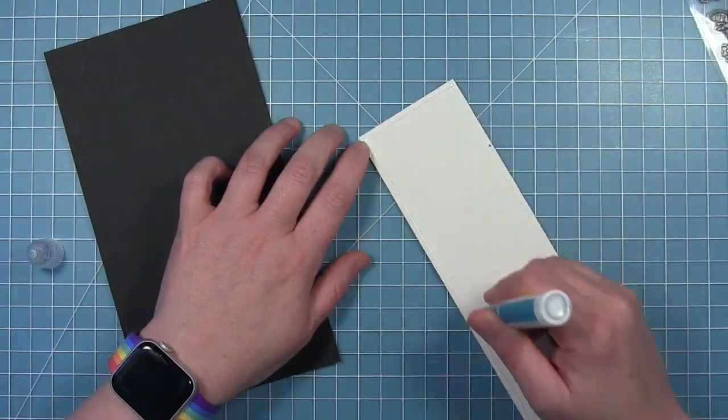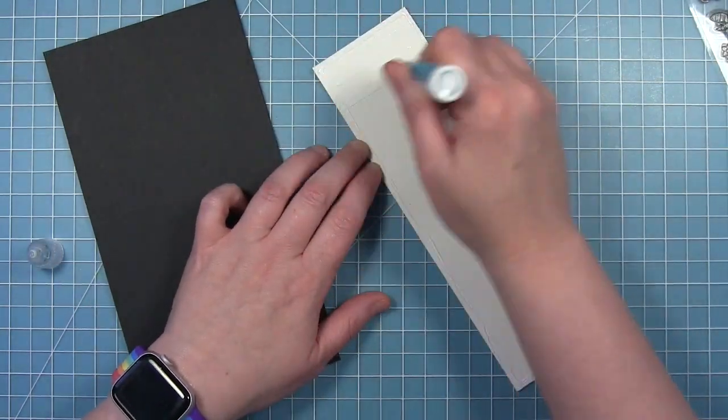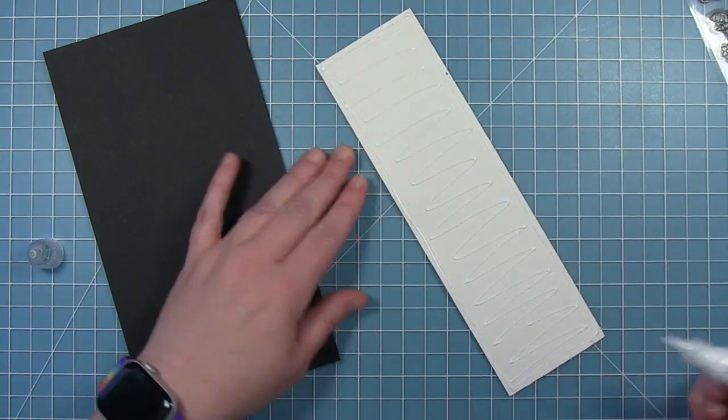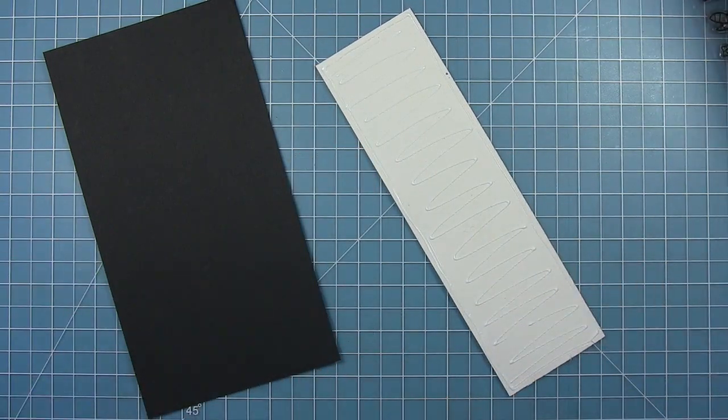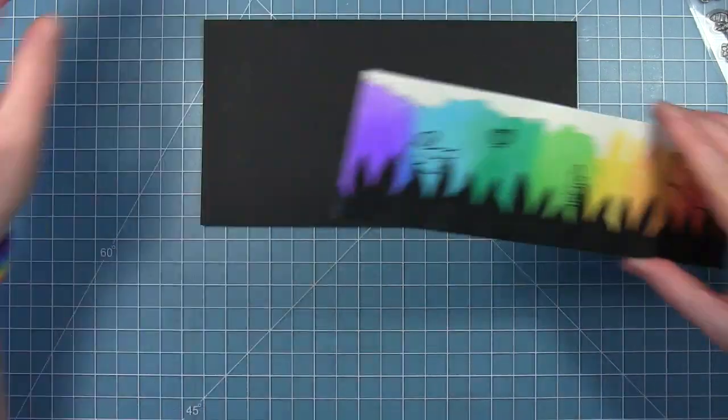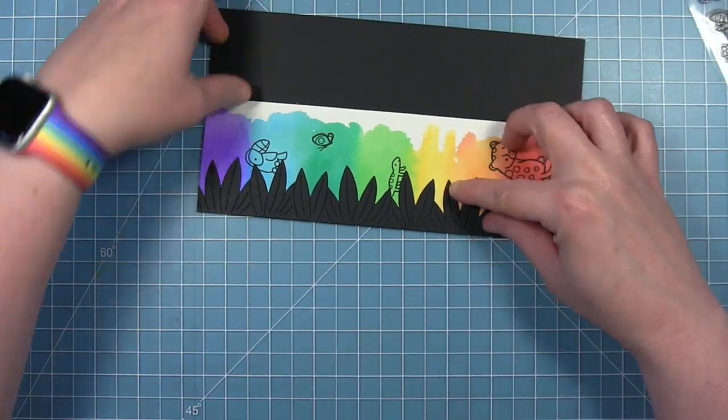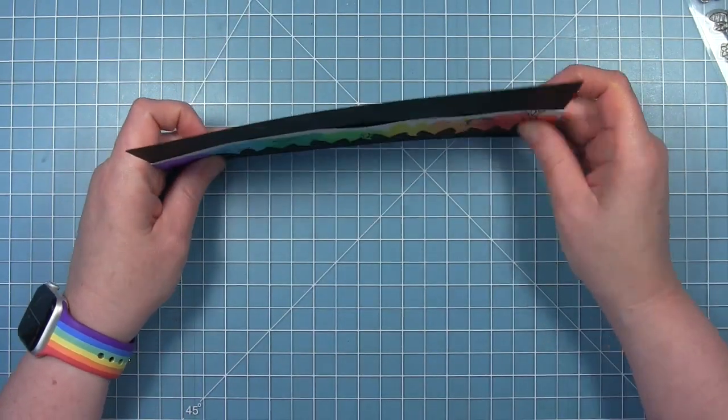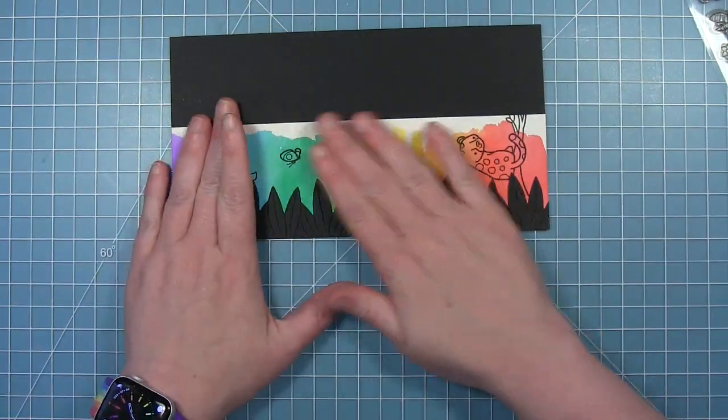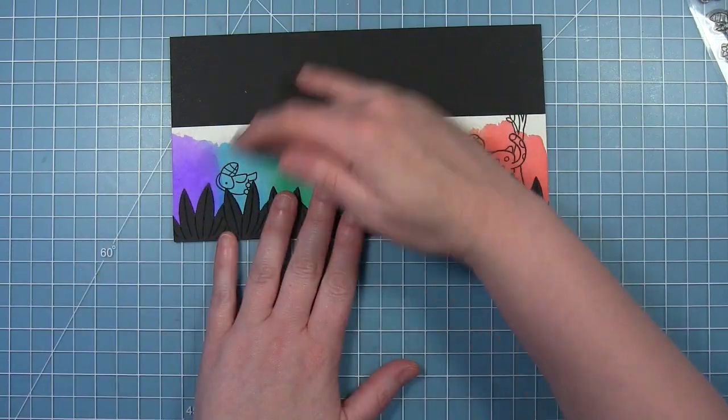And then I also wanted to back it with a piece of black cardstock just to make this a little more sturdy. It's slightly warped because I added water to make all those pretty colors. So this is just going to kind of laminate it, make it a little thicker and a little more sturdy. And it'll also keep it nice and flat.